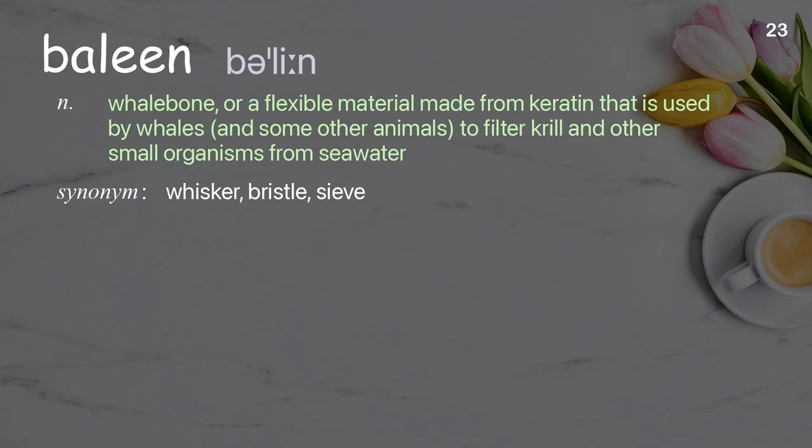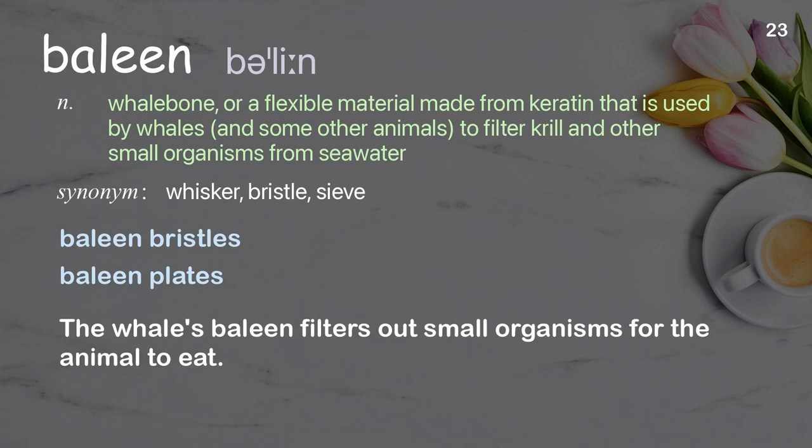Baleen: whale bone, or a flexible material made from keratin that is used by whales and some other animals to filter krill and other small organisms from seawater. Examples: baleen bristles; baleen plates; the whale's baleen filters out small organisms for the animal to eat.